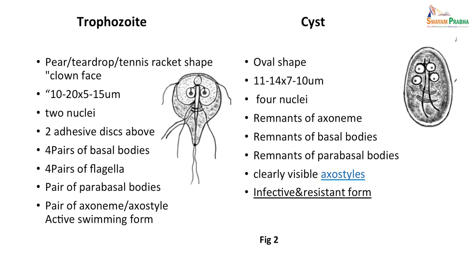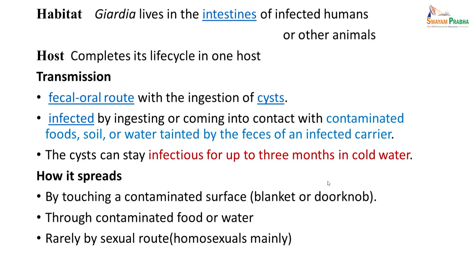The trophozoite has a pair of axonemes and is the active, motile form of the organism. The cyst is the infective and resistant form by which infection is carried from one host to another. The habitat is the intestine of infected humans or other animals, and it completes its life cycle in one host. Transmission is through the fecal-oral route — by ingesting cysts or coming into contact with contaminated food, soil, or water tainted by feces of an infected carrier. Cysts can remain infectious for up to three months in cold water, and transmission can also occur rarely by sexual route, mainly in homosexuals.